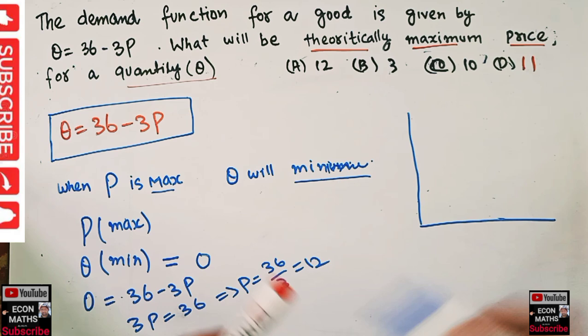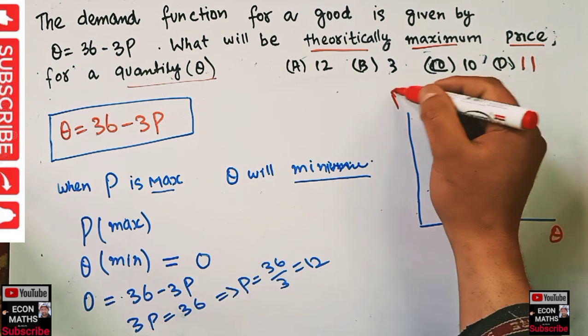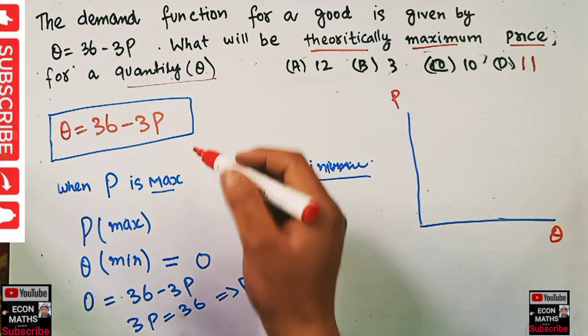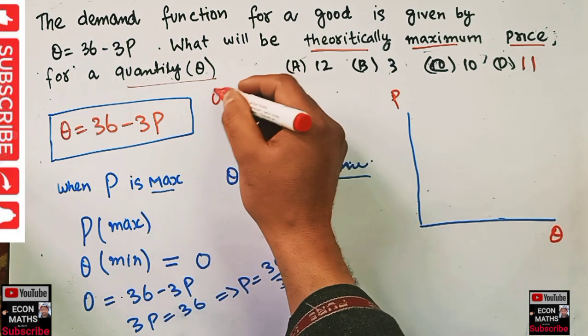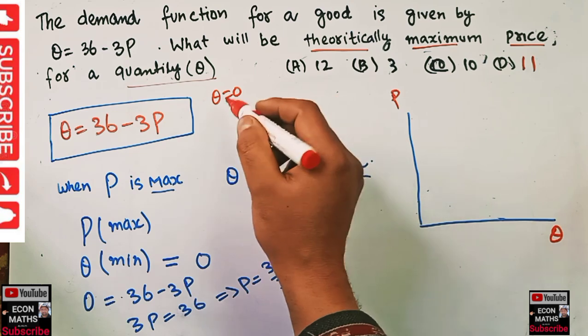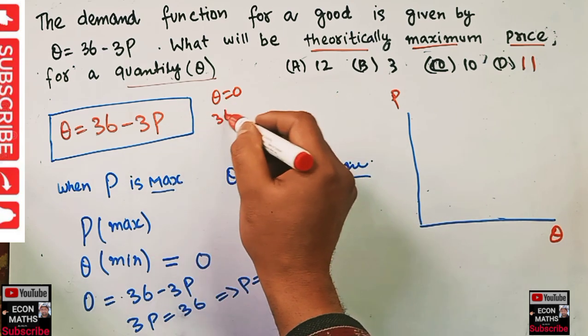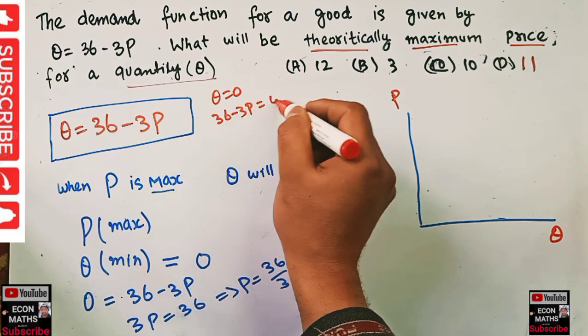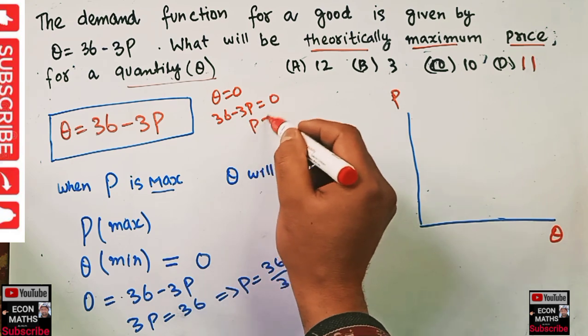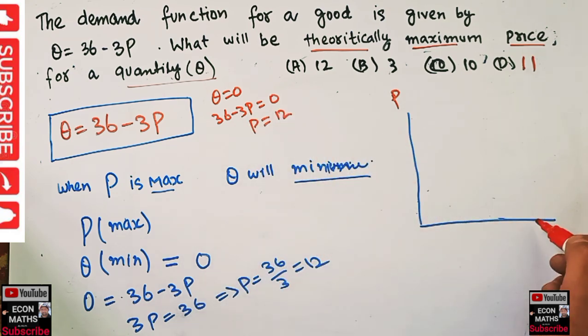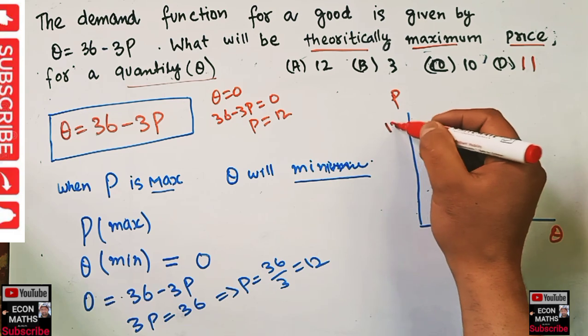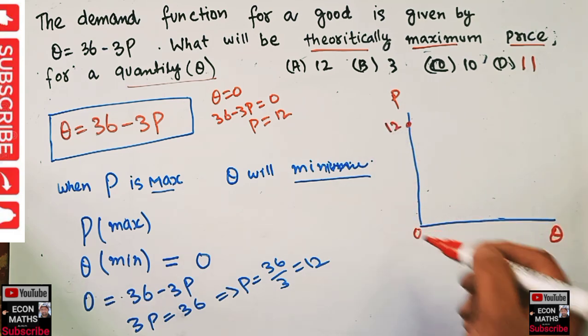Second approach will be to find the two pointers. We have quantity demanded here, price here. First, we put Q = 0 in this equation, then this becomes 36 - 3P = 0. Solving for P, we will get 12. So when Q = 0, P is 12. P is the maximum point.